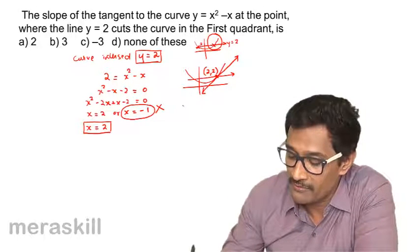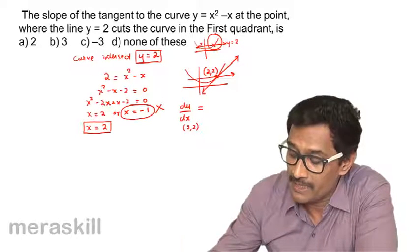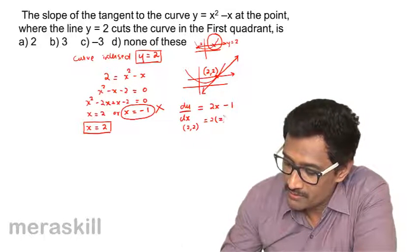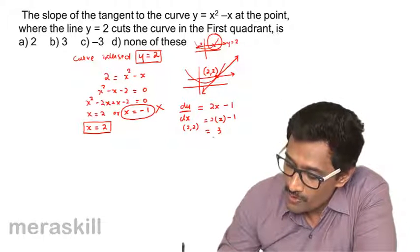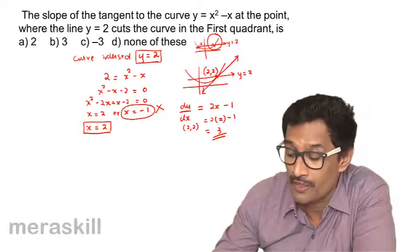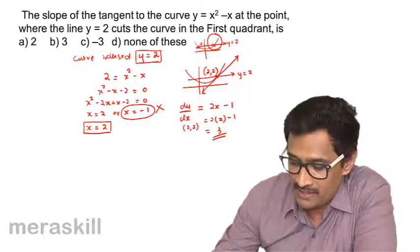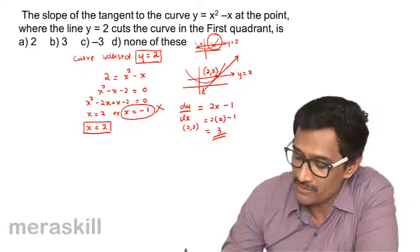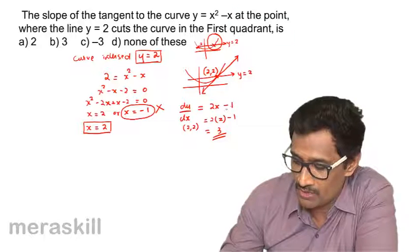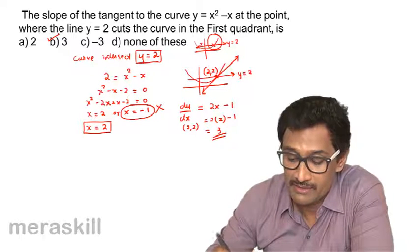We need the slope of the tangent at (2, 2), so we find dy/dx for the curve at that point. dy/dx = 2x - 1. At x = 2: dy/dx = 2(2) - 1 = 3. So the slope of the tangent at the point where the curve touches y = 2 is 3.